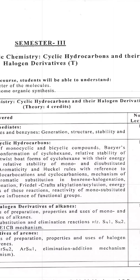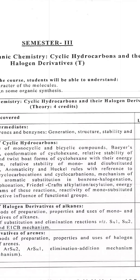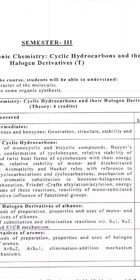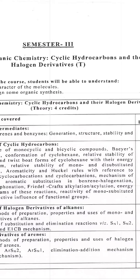So, cyclic hydrocarbons — you know that the carbon cycle is going to be studied. Just like cyclohexane, cyclopropane, cyclobutane. And halogen derivatives — halogens like fluorine, chlorine, bromine, iodine — are attached, meaning hydrogen in cyclic hydrocarbons is replaced by halogens.